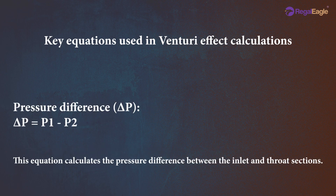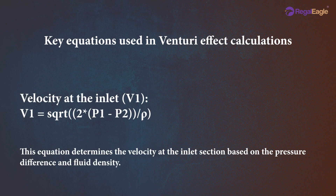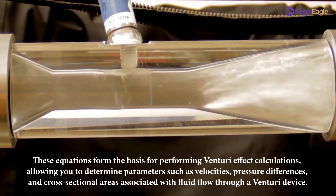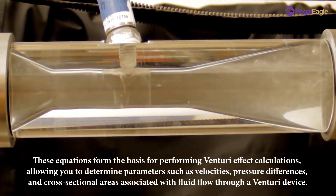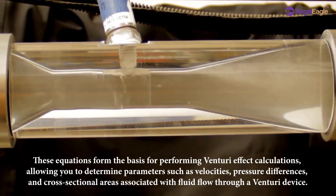The pressure difference equals P1 minus P2, which calculates the pressure difference between the inlet and throat sections. The velocity at the inlet V1 equals the square root of 2 multiplied by the difference between P1 and P2, all divided by rho. This determines the inlet velocity based on the pressure difference and fluid density. These equations allow you to determine parameters such as velocities, pressure differences, and cross-sectional areas associated with fluid flow through a venturi device.